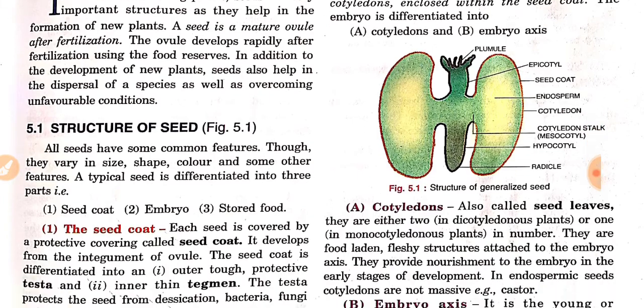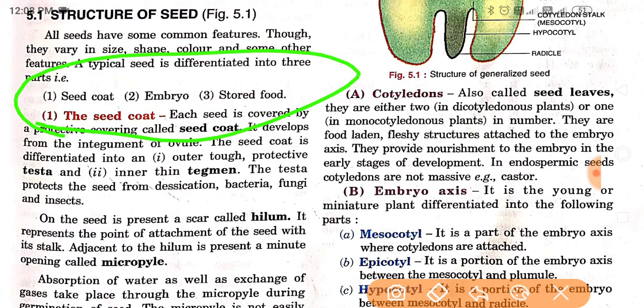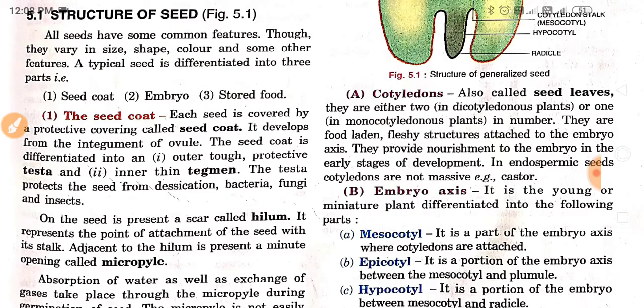If we talk about the structure of a seed, all seeds have some common features, though they vary in size, shape, color, and some other features. A typical seed is differentiated into three parts: seed coat, embryo, and stored food.